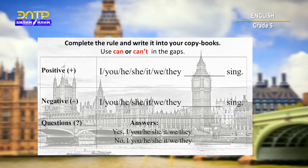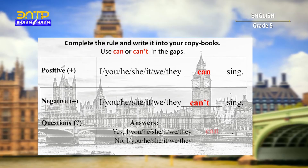In positive sentences with all pronouns, we use 'can' and the base form of the verb. In negative sentences, we use 'can't' with all pronouns and the base form of the verb. In positive short answers, we should use: yes + pronoun + can. In negative short answers, we should use: no + pronoun + can't.